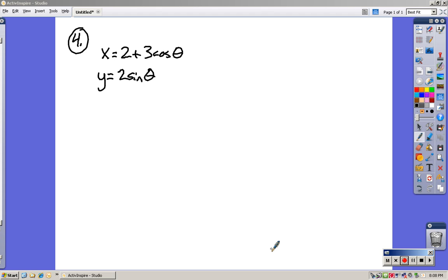Math 142, practice test number three. This is question number four. And I'm supposed to take this set of parametric equations and write an equivalent rectangular equation.